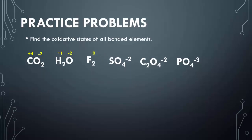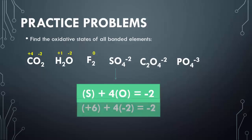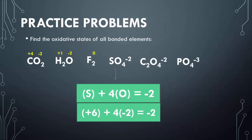Looking at the sulfate ion, you have one sulfur and four oxygens, and overall it equals a negative two charge. Oxygen is still negative two, so four times negative two is negative eight. Something plus negative eight equals negative two, so sulfur is going to have a positive six charge.